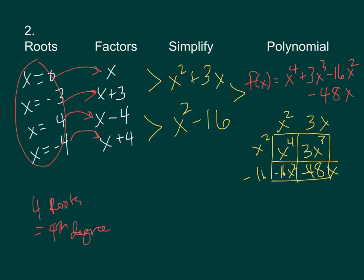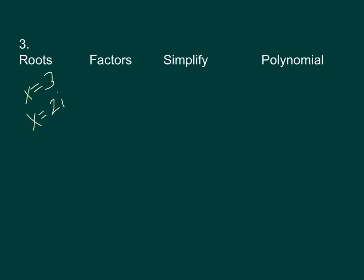It gets one degree more difficult when you start getting complex roots. For instance, we have a root of x equals 3 and a root of x equals 2i. The tricky thing here is that if you have a root of 2i, you also have its conjugate root, which is negative 2i. If you remember a plus bi and its conjugate a minus bi — you can't have one without the other. So if you see one complex root, you need its conjugate as well.